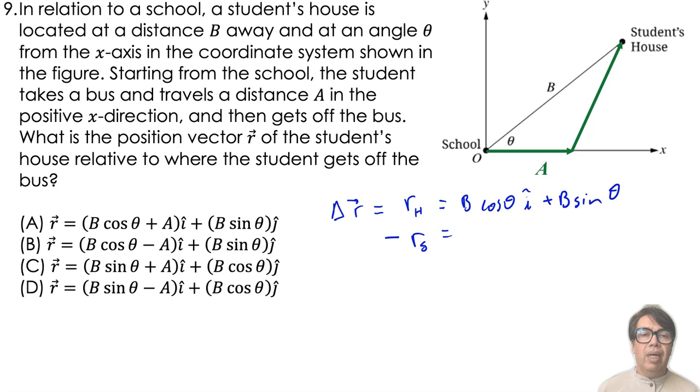This subtraction results in B cosine of theta minus A i plus B sine of theta j. This is option B.